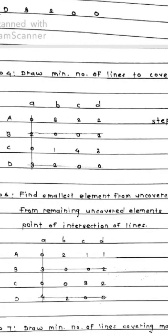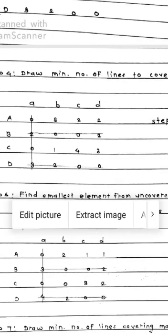Now along with this, you need to add this element 1 at the point of intersection. So the point of intersection is at element 2 in B row and 3 at D row. So 2 plus 1 will be 3 and 3 plus 1 will be 4.